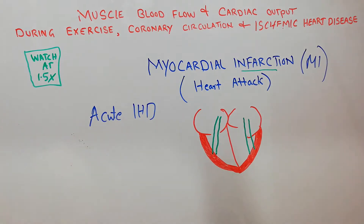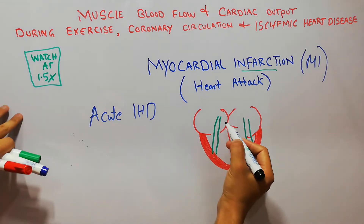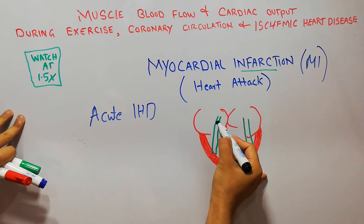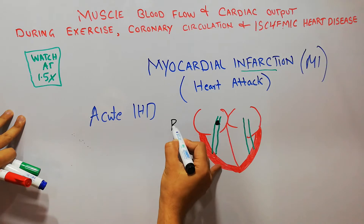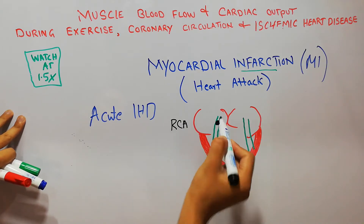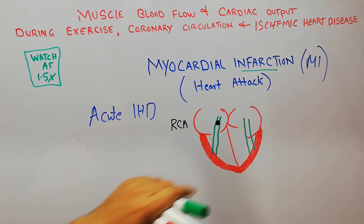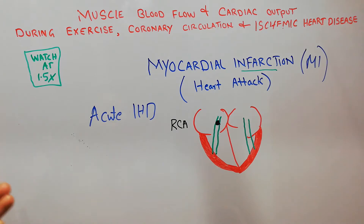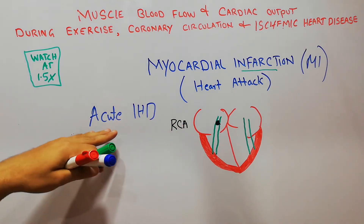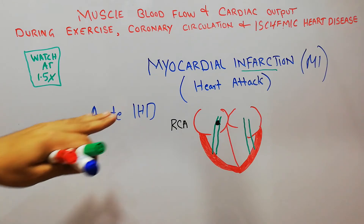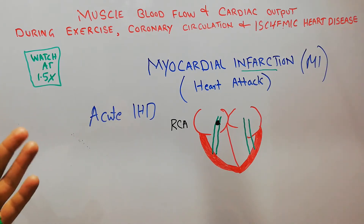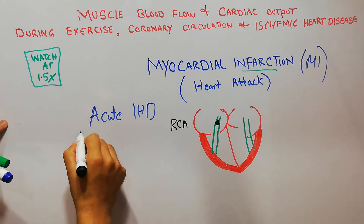In myocardial infarction, there is formation of a thrombus in a coronary vessel — for example, in the right coronary artery (RCA). A blood clot forms there. We discussed that the most common cause of chronic ischemic heart disease is atherosclerosis.